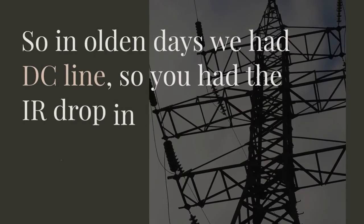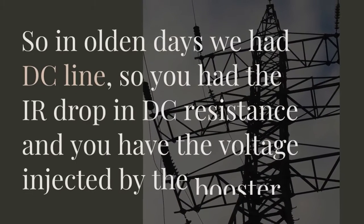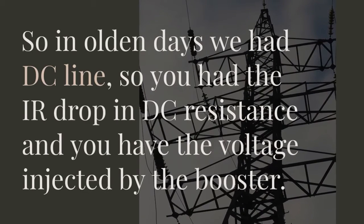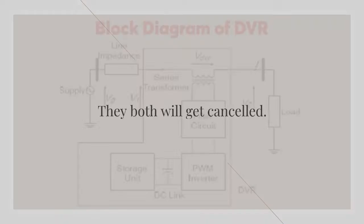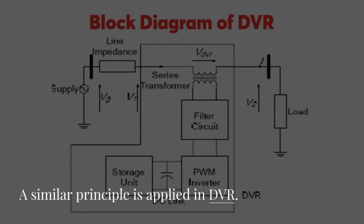So in olden days we had DC line, so you had the IR drop in DC resistance and you have the voltage injected by the booster. They both will get cancelled. A similar principle is applied in DVR.